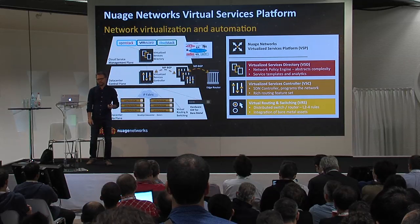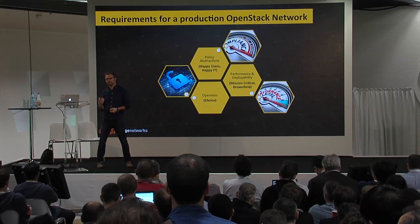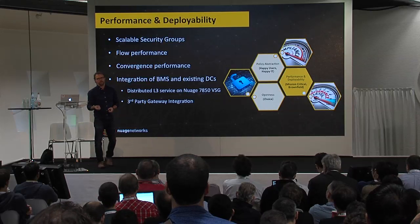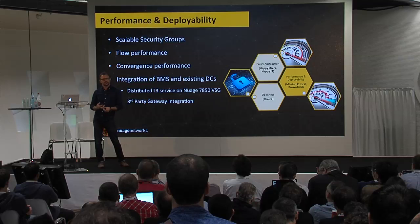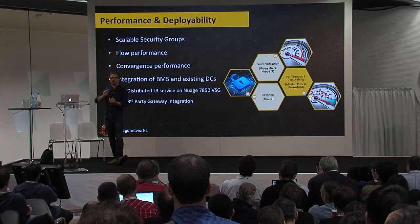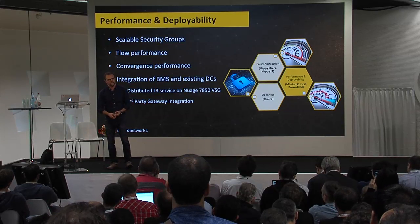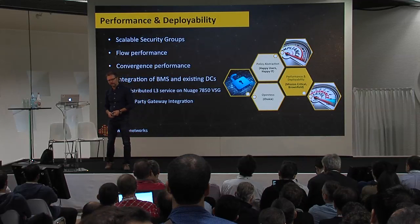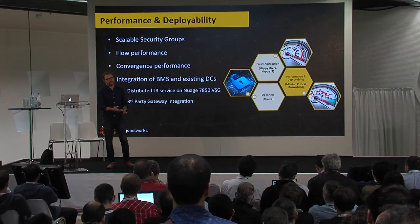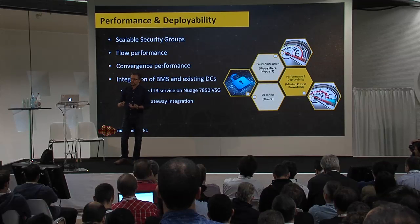For a production OpenStack network — something rock-solid and stable — we focus on three things. First is performance and deployability: I need to do security grouping and multi-tenancy at scale, support lots of high-speed flows, saturate that 10 gig link without choking it back. I need rapid convergence — in a large-scale cloud with a DR scenario, I need to stand up tens of thousands of new VMs quickly. And I need integration into existing environments because not everything is virtualized, not everything is OpenStack. I still have VMware over there, mainframes over there — I need gateways to tie all those things together, leveraging routing technology from our parent company Alcatel Lucent.